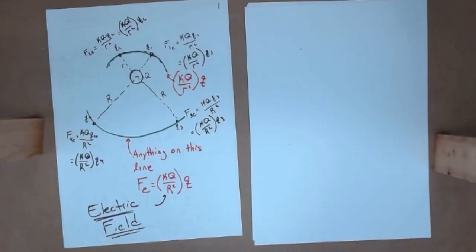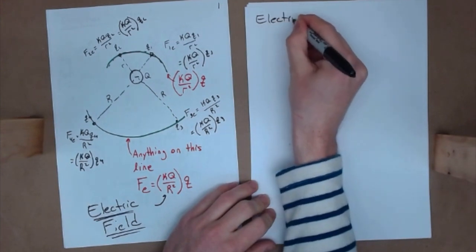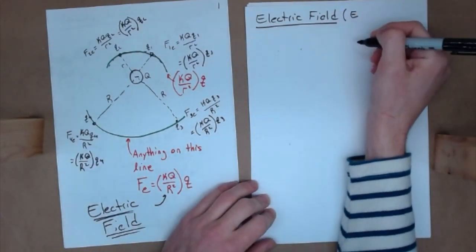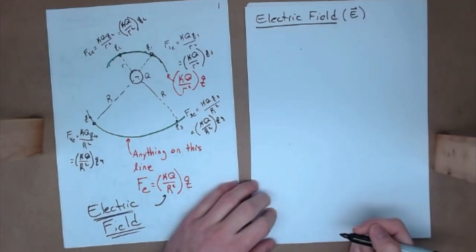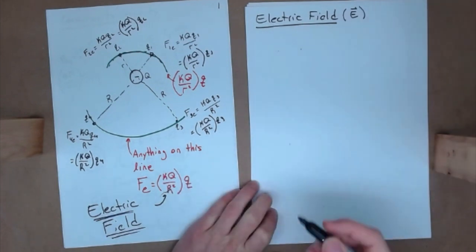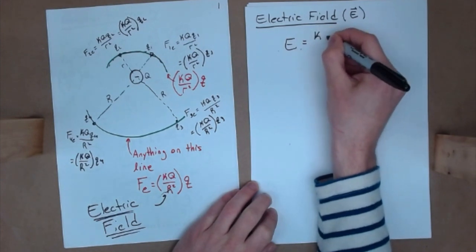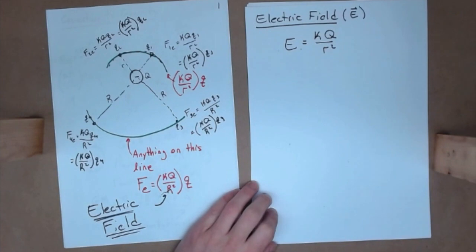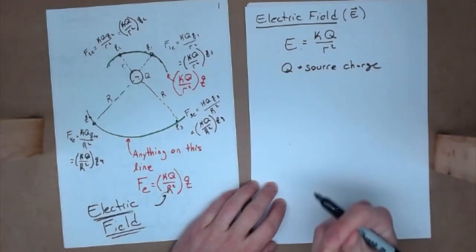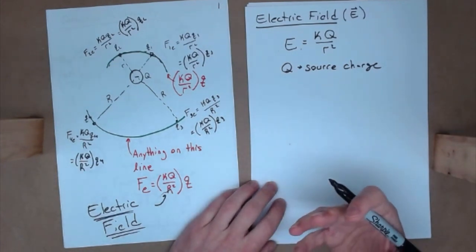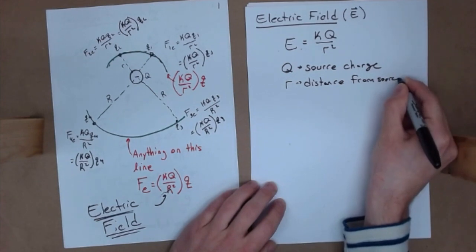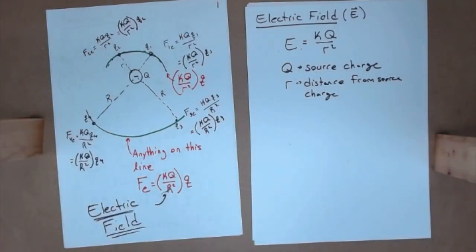The electric field is a physical quantity, so we give it the variable E. Just like the acceleration due to gravity, it has to be a vector — it has to point in some direction. The electric field equation is E = KQ/r², where Q is the source charge — the charge responsible for the presence of the electric field. In our demonstration, that was the hanging balloon. r is the distance from the source charge; the further away you go, the weaker the field, which makes sense.